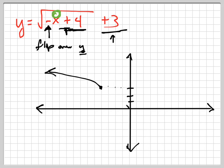When I plug in 0, I get 0 plus 4, which is 4. The square root of 4 is 2. 2 plus 3 is 5. I get the point 0, 5. The point 0, 5 should be in my graph.